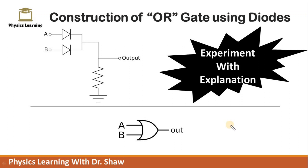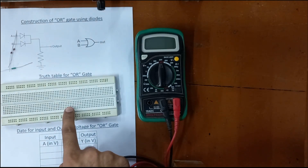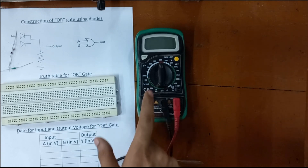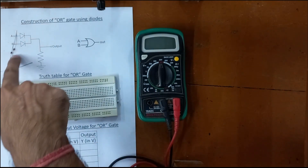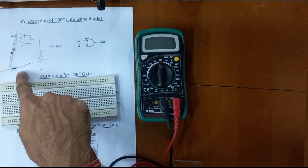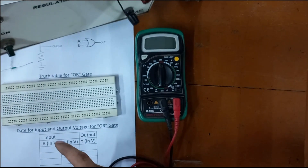In this video, we will see how we can construct an OR gate using a diode. Welcome to Physics Learning. In order to perform this experiment, we need one breadboard, one multimeter to measure the output voltage, two diodes, one resistance, and finally one 5-volt power supply.